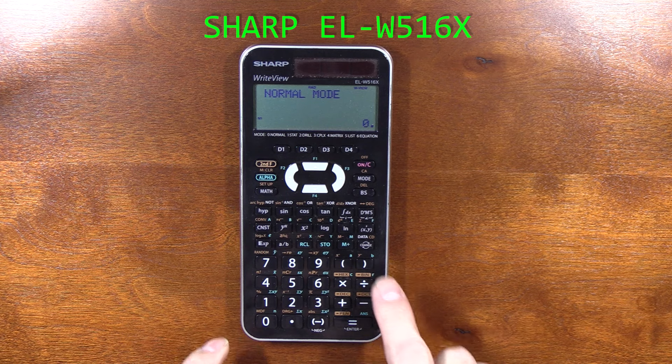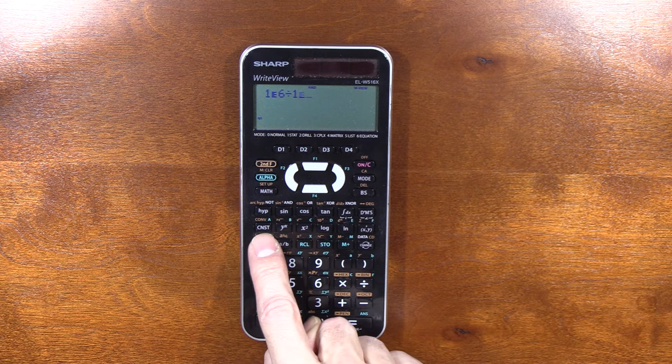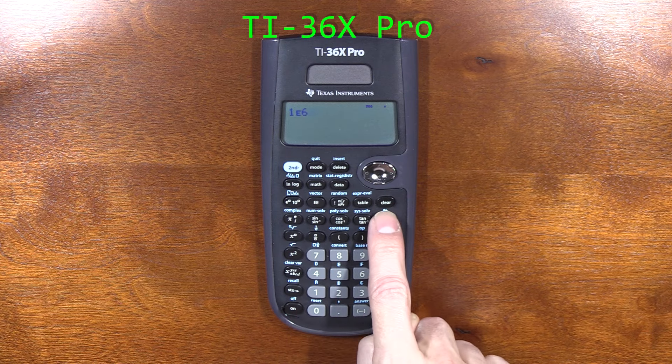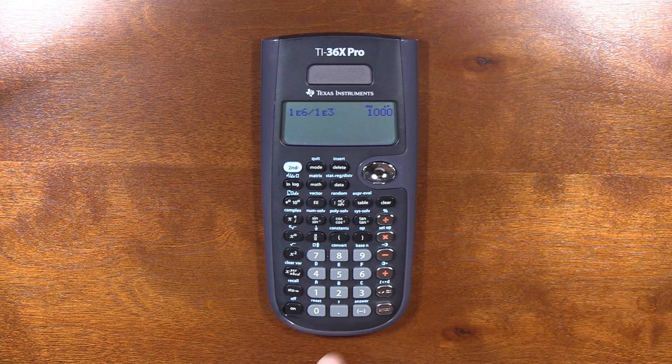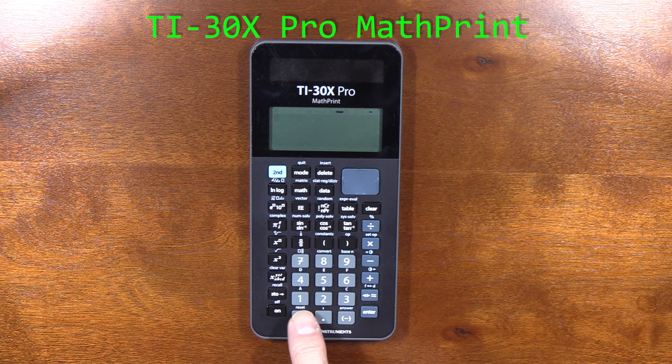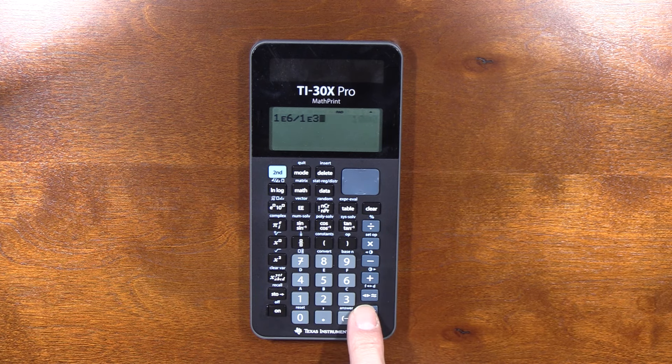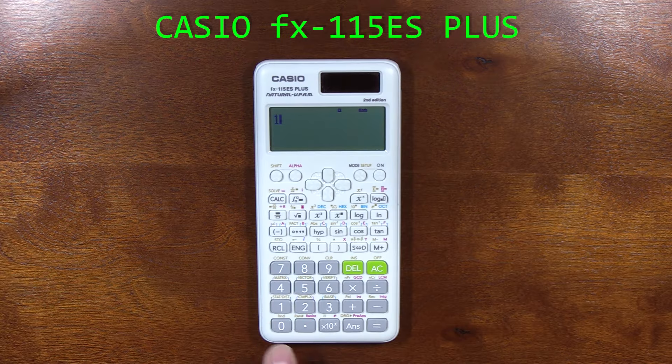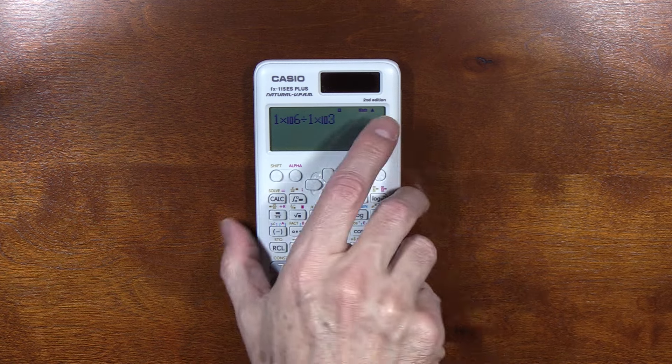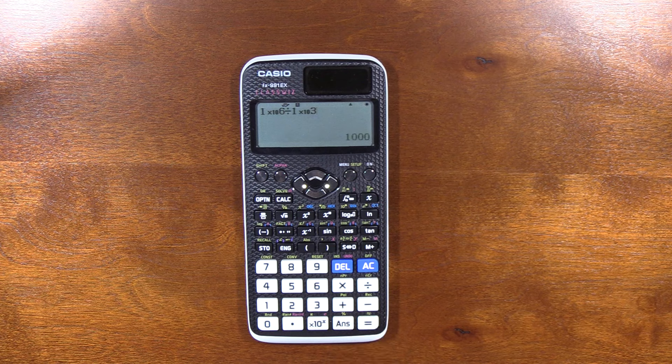All right, let's look at a few different calculators. An oldie but goodie here. So we're going to do one times ten to the sixth divided by one times ten to the third. We get one thousand. One times ten to the sixth divided by one times ten to the third equals one thousand. One times ten to the sixth divided by one thousand. One times ten to the sixth divided by one times ten to the third equals one thousand.